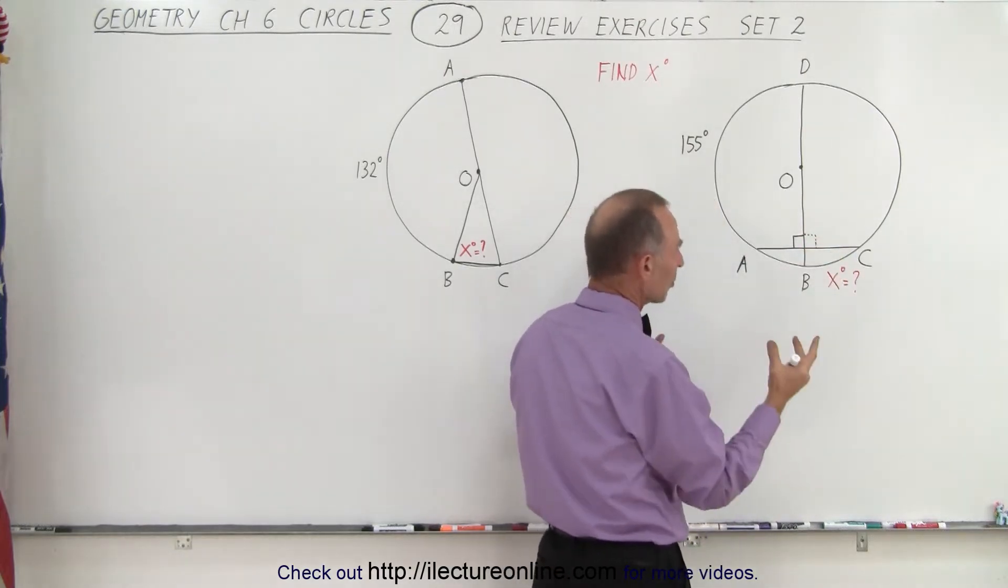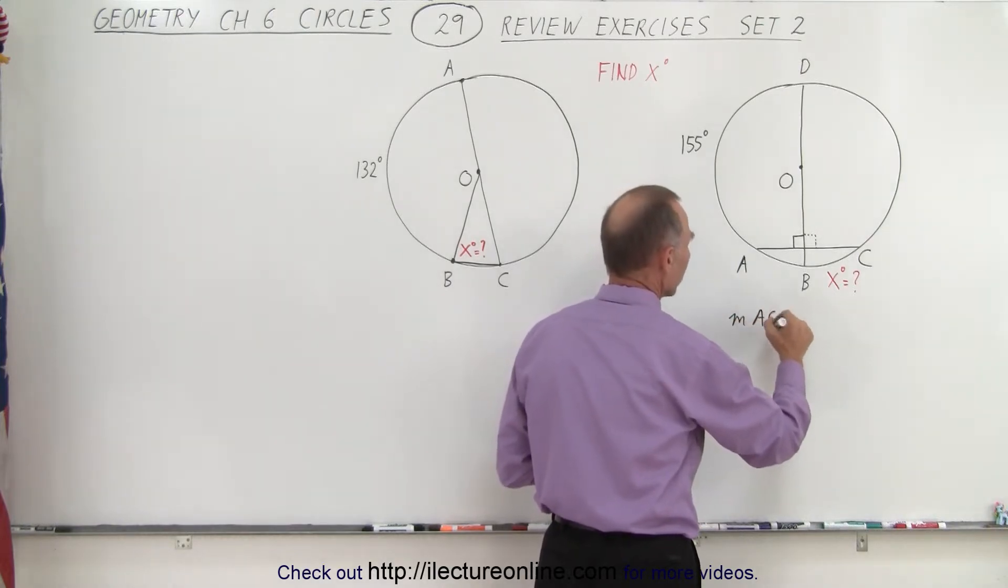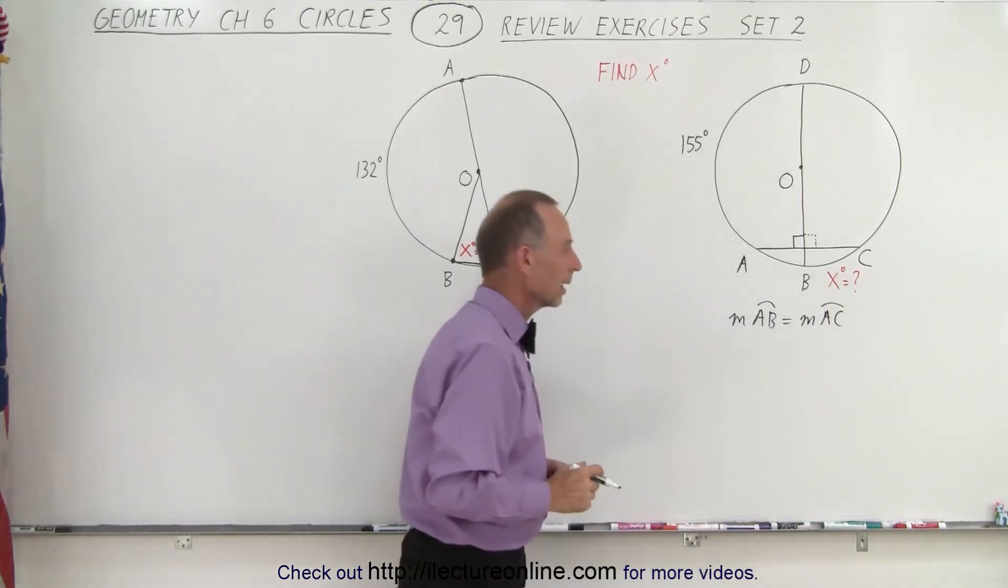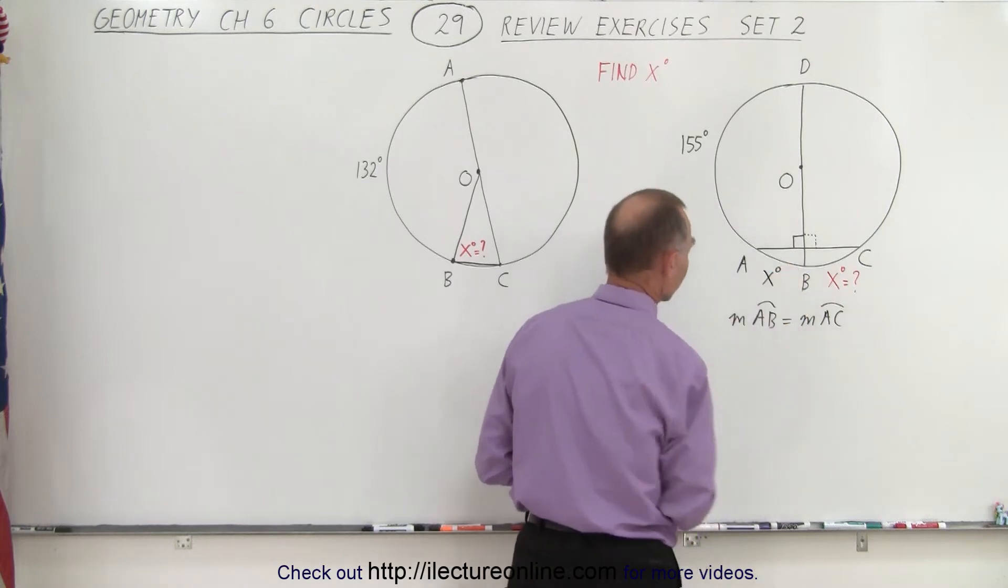And because of symmetry, we can then say that the measure from A to B must equal the measure from A to C. That means that on the other side, this also must be equal to X degrees.